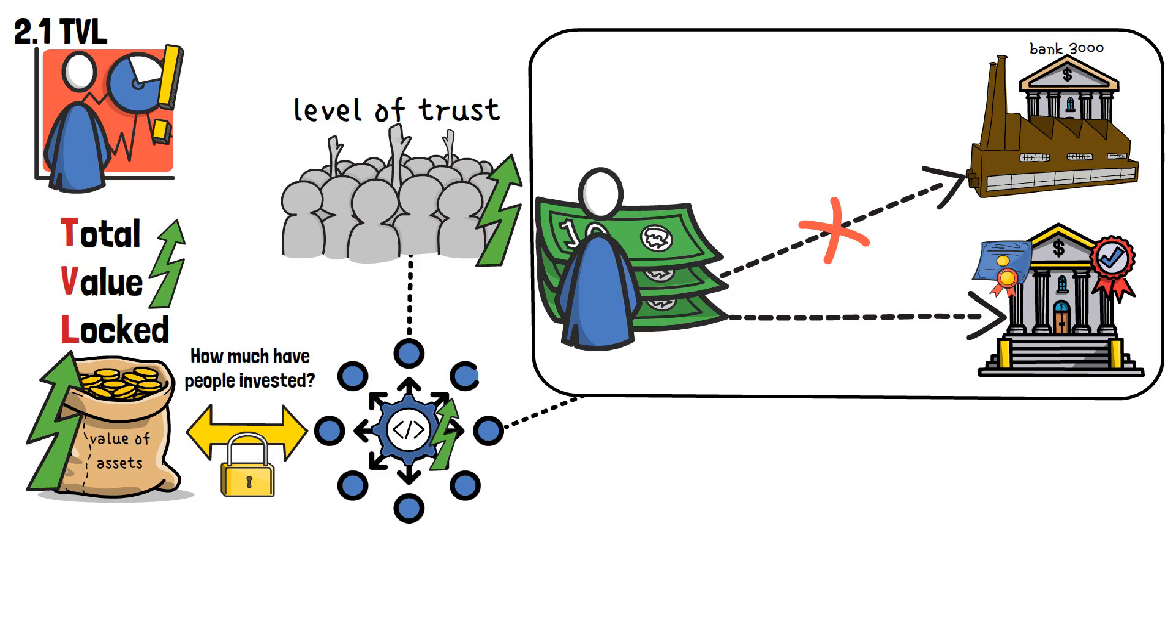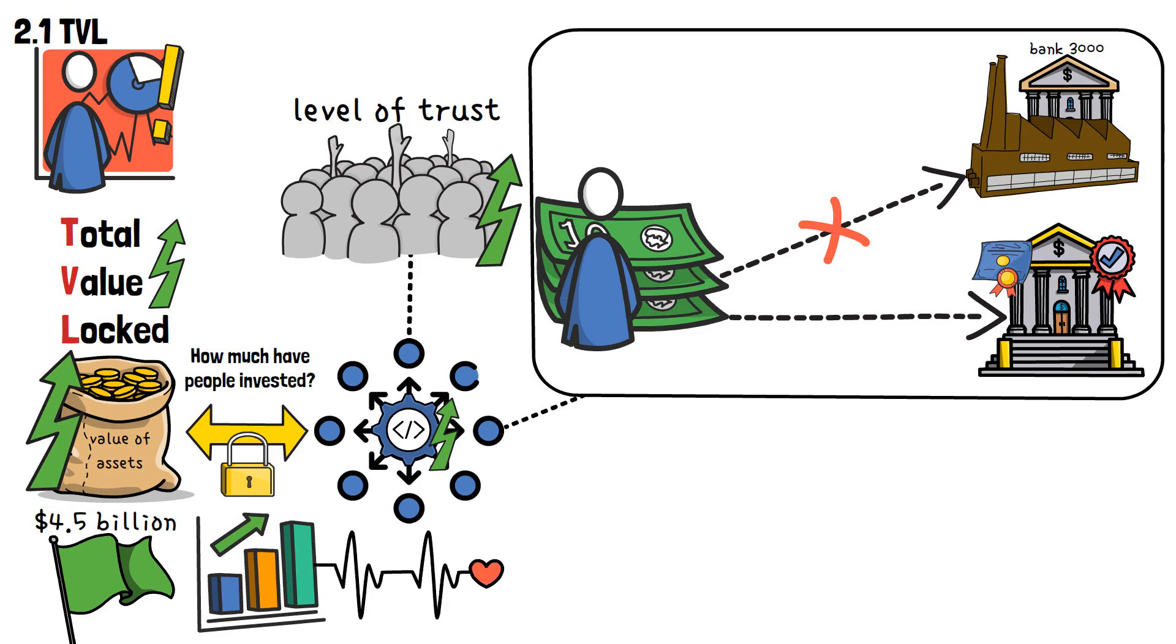Same goes with DeFi dApps. So let's say a particular decentralized lending protocol has a TVL of 4.5 billion dollars. Not only is it a green flag because of how large the number is, but it's been increasing over time as well. That's yet another optimistic signal about the actual financial health of the dApp in question.